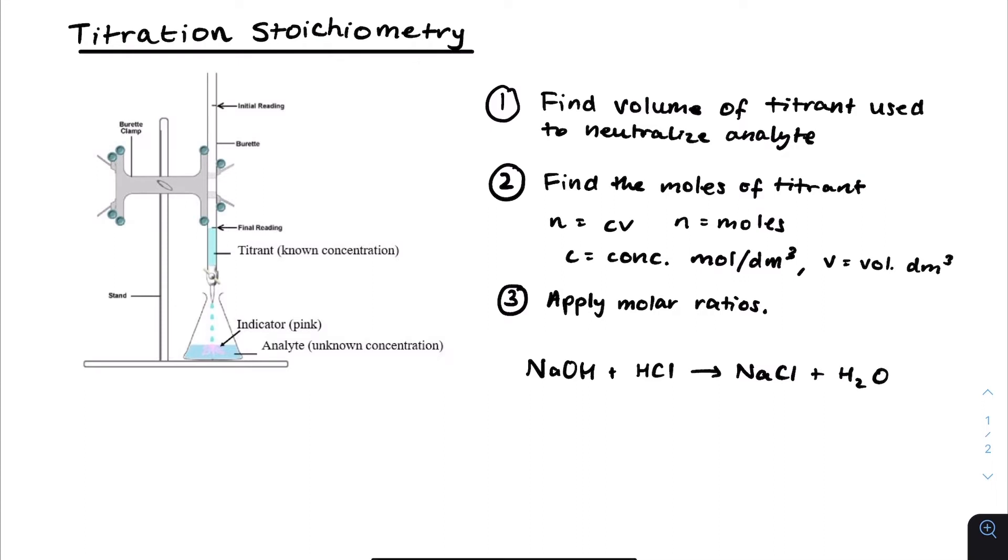Well, if our titrant was HCl, and we found the moles of the HCl, we have to apply it to the NaOH based on molar coefficients. In this case, HCl and NaOH have the same coefficient, they're both one. Everything in this equation is actually one, which means that the moles are in a one-to-one ratio. Therefore, NaOH moles are equal to the HCl moles.